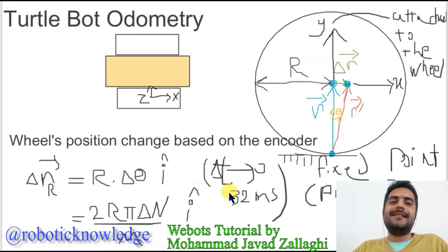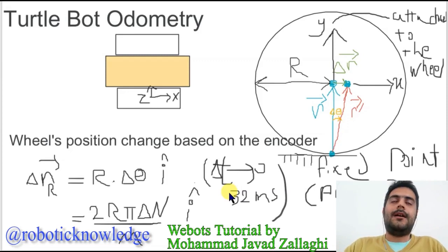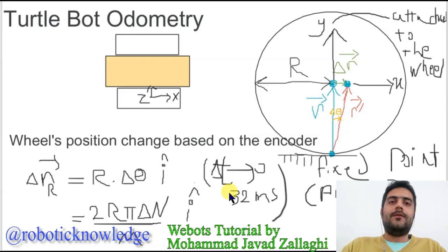It is an interesting problem for us because before using LiDAR to map the environment, we have to know about the current position of the mobile robot itself.